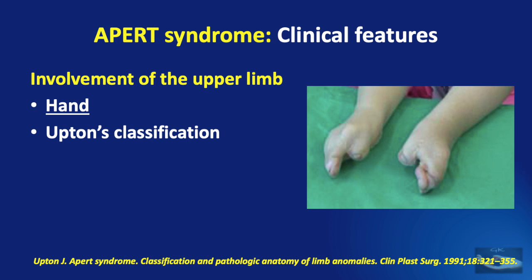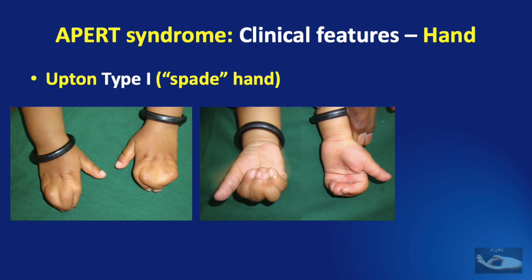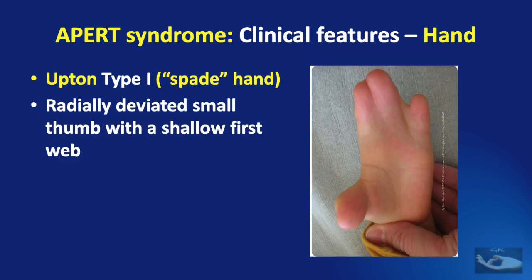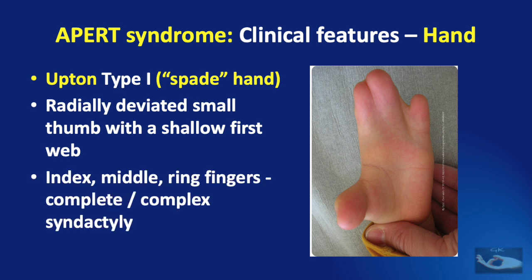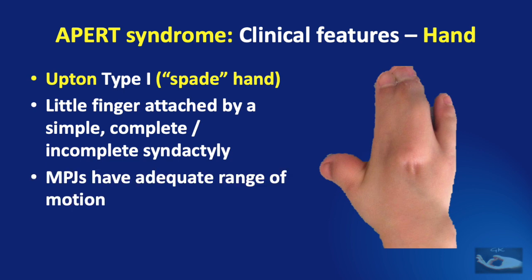In the Type 1 hand, otherwise known as a spade hand due to the resemblance to the spade, there is a radially deviated small thumb with a shallow first web. The index, middle, and ring fingers display complete or complex syndactyly. The little finger is attached by a simple, complete or incomplete syndactyly and can mostly move at the distal interphalangeal joint. The metacarpophalangeal joints have adequate range of motion.